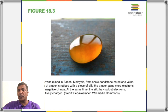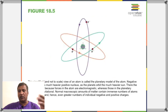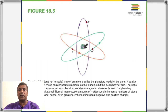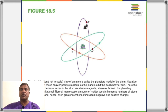Here is a simplified model of an atom, where you have the nucleus containing protons and neutrons, while outside the atom we have the negatively charged electrons revolving in particular orbits.